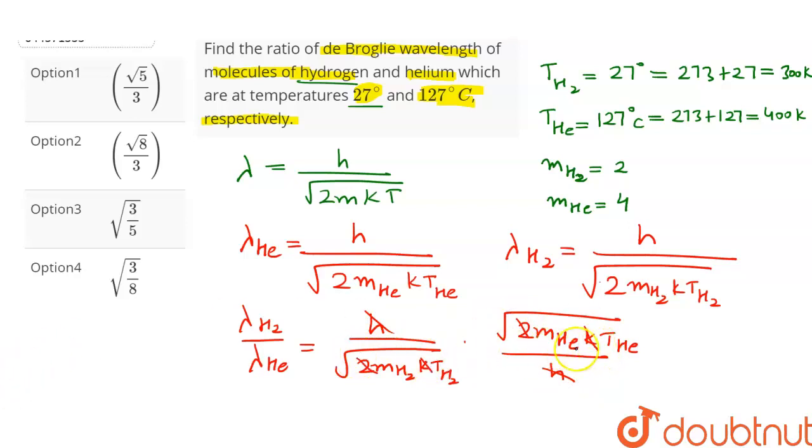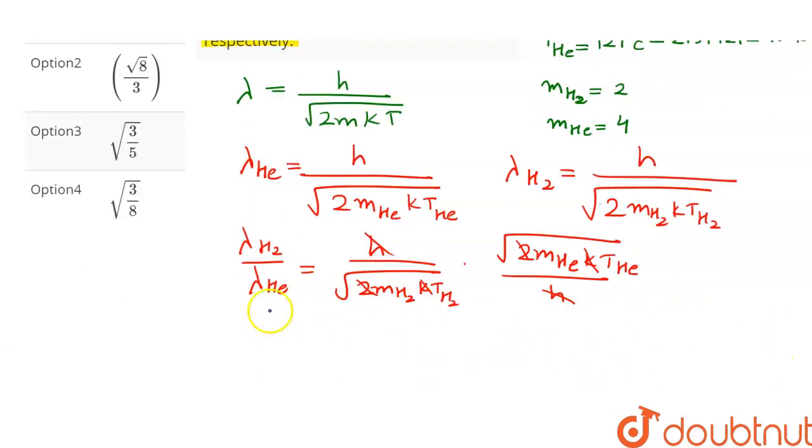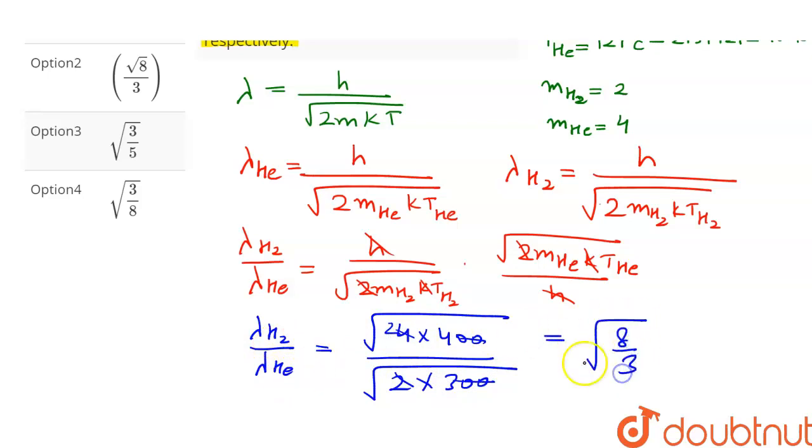Let's substitute the value of temperature and mass in this equation and we get lambda H2 upon lambda He is equal to under root of 4 into 400 upon under root of 2 into 300. This will get cancelled and we get lambda H2 upon lambda He is equal to under root of 8 by 3.